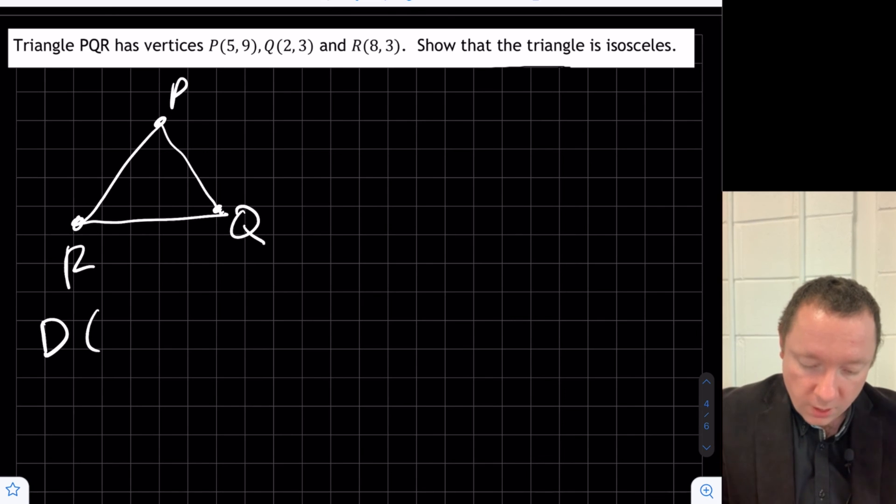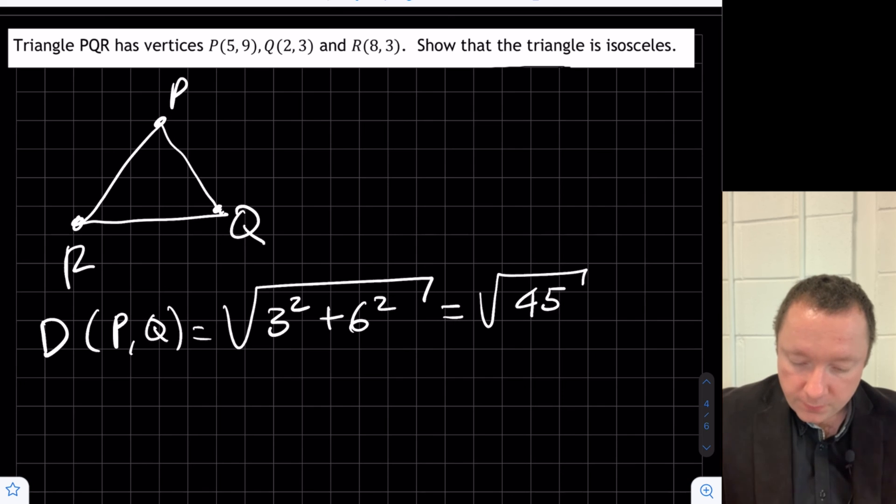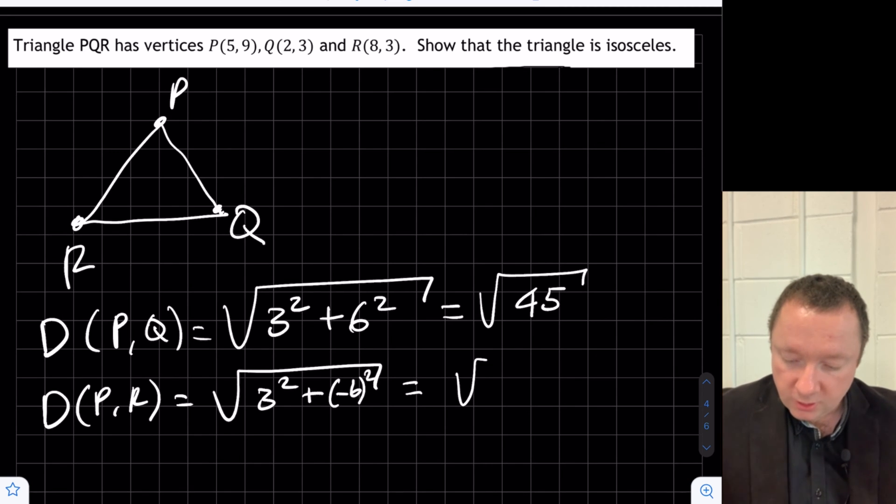So if I try the distance from P to Q, well, that's the square root of 5 minus 2 squared is 3 squared, 9 minus 3 squared is 6 squared. That's the square root of 45. Now we could do the distance from P to R. So we've got 8 minus 5 is 3 squared. And we've got 3 minus 9 is minus 6 squared. That is 36 plus 9, the square root of 45.